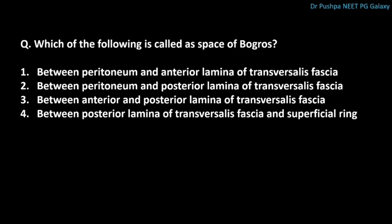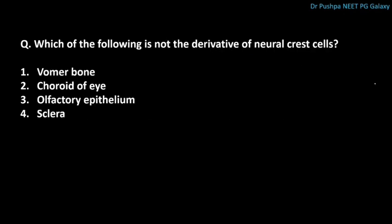Which of the following is called the space of Bogros? The correct answer is the space between the peritoneum and the posterior lamina of the transversalis fascia. The space between the anterior and posterior lamina of the transversalis fascia is called the vascular space. Which of the following is not a derivative of neural crest cells? The correct answer is olfactory epithelium.